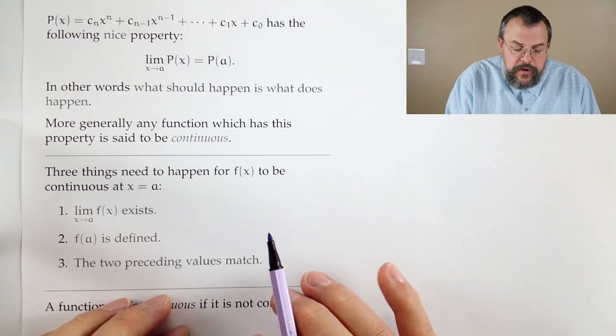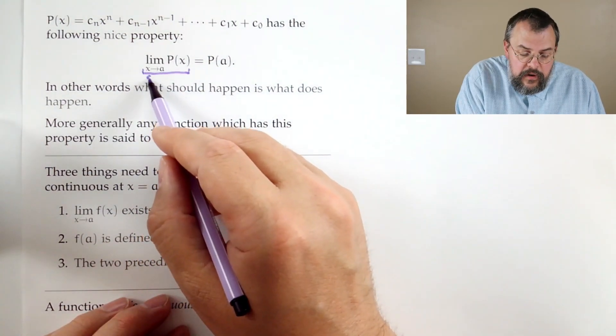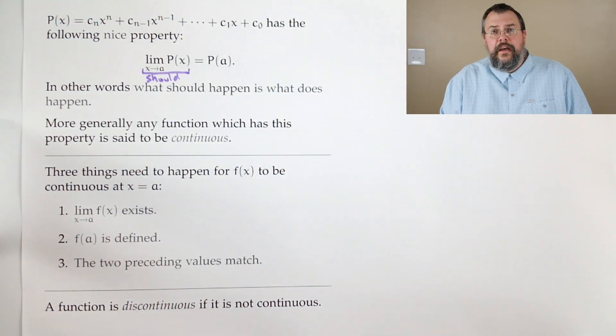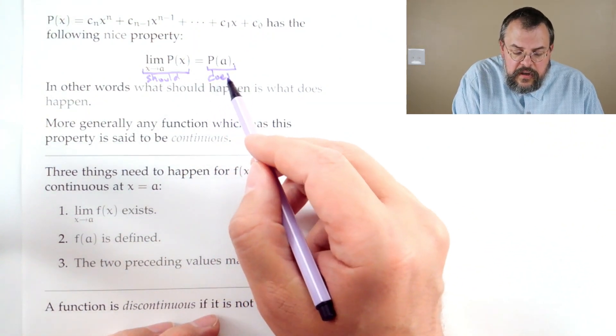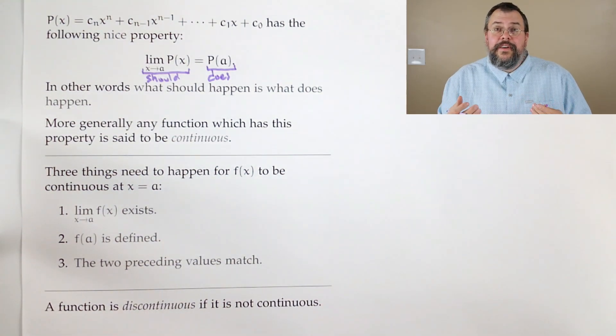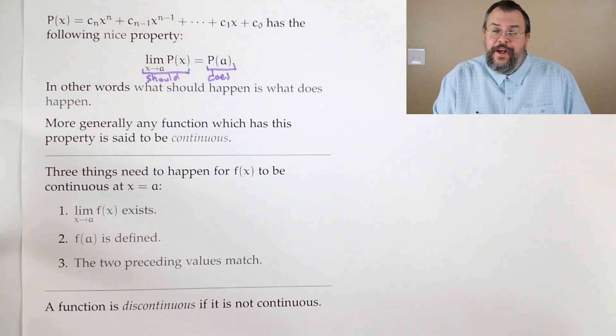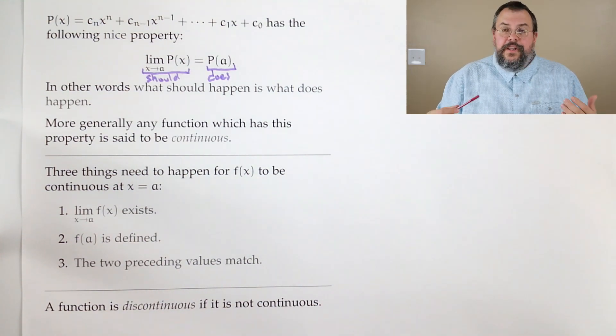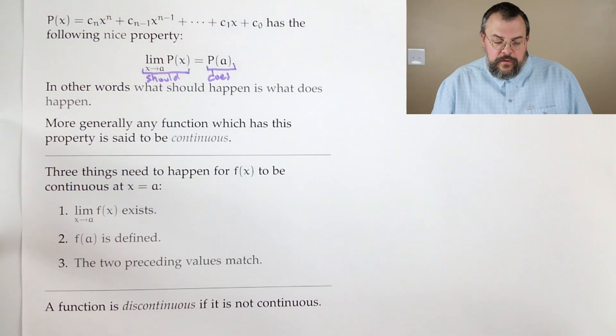So why is that nice? Well, if you think about what's being represented here, this left-hand side, when we talk about limits, this is what should happen. Because that's what limits measure. They say, what should happen to the function at a? And the p(a), this is what does happen. So in other words, what's the value at a? So what should happen is what does happen. Another way to think of it is that your expectation matches your reality, which is sometimes a little bit hard to imagine in this world, but it can happen. So these are really nice functions.